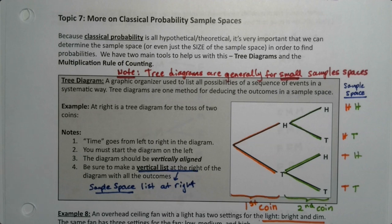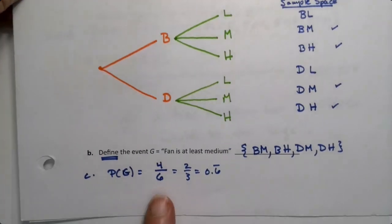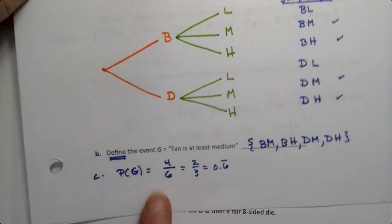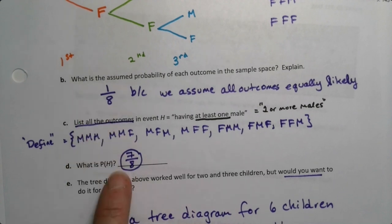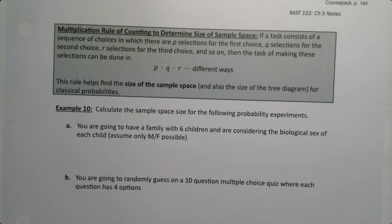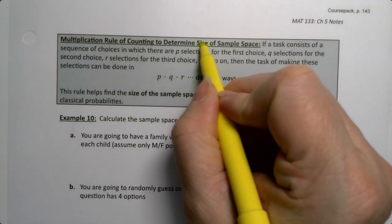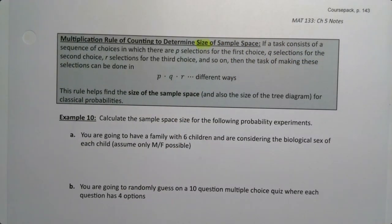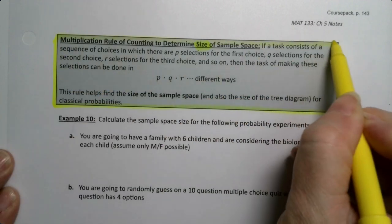We need another way to find the sample space size because the size of the sample space will help us determine the probabilities. We need that size of the sample space to be our denominator, even if we never figured out the tree diagram itself. So that's what the multiplication rule of counting does for us. It will determine the size of the sample space without actually making the tree diagram.